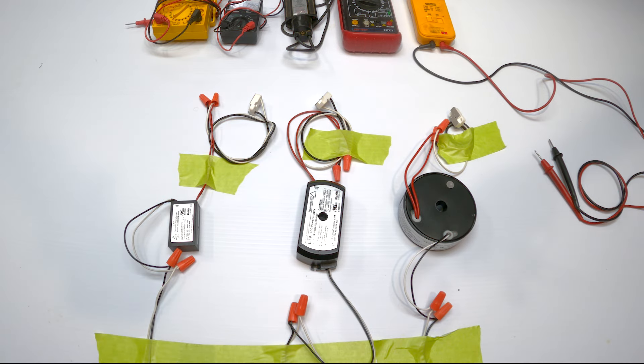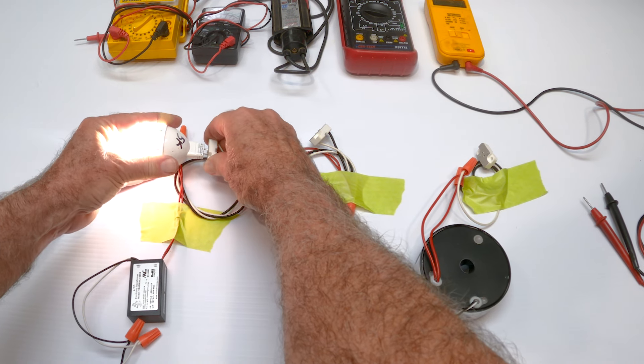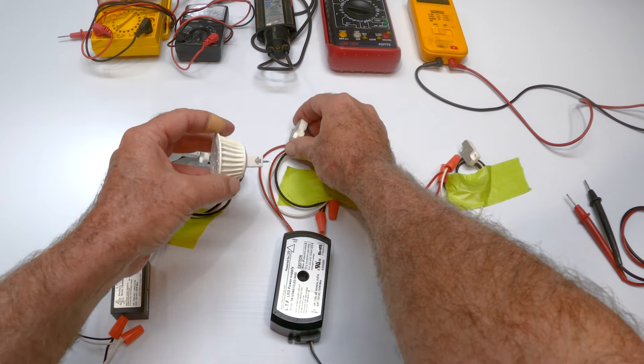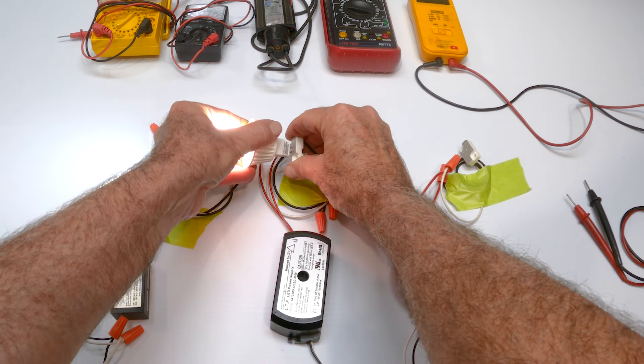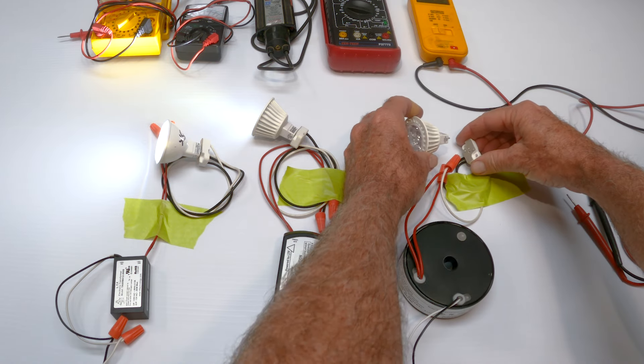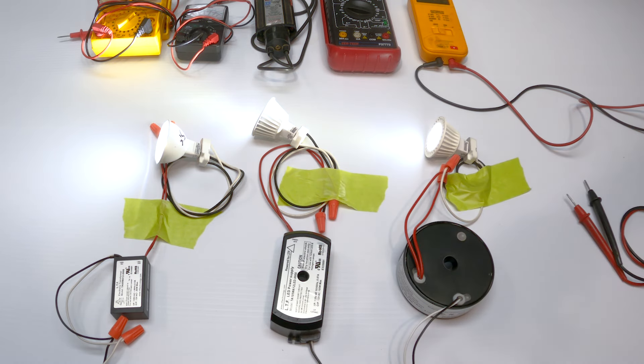So let's see if these three transformers that were returned to us are actually defective. So I'm going to just take a 12 volt light bulb, this is an LED bulb, and I'm going to put it in each socket. And as you can see, all the light bulbs light up. So we know that the problem isn't the transformer, but it really could be somewhere else in the circuit.